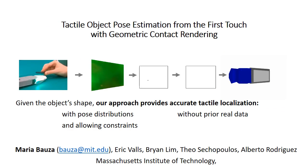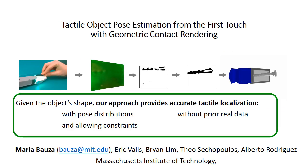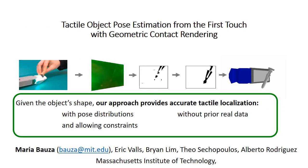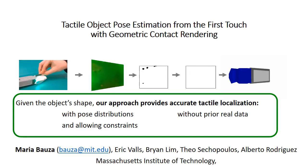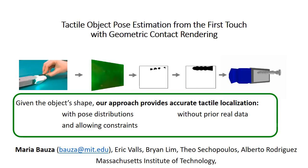In summary, we have presented an approach that, given the object model, can provide accurate tactile localization for a given object. We do that by providing pose distributions rather than single estimates, to account for the multiple poses that can result in very similar contact shapes. Moreover, we do that without requiring any prior data, and our model can be combined with external constraints like multi-contact.